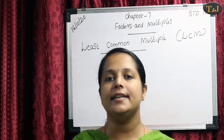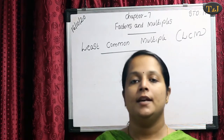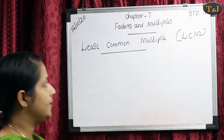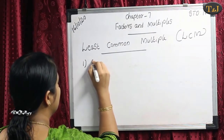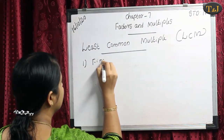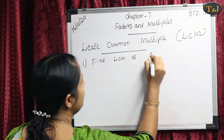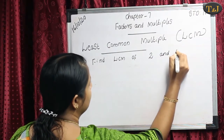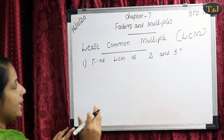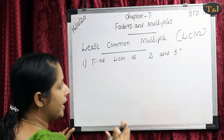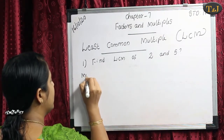Our next heading is Least Common Multiple, that means LCM. Then how can we find out the LCM? I will explain with the help of some examples. Our first example: Find the LCM of 2 and 5. First we write the multiples of 2 and 5 — here we write 10 multiples of each number.